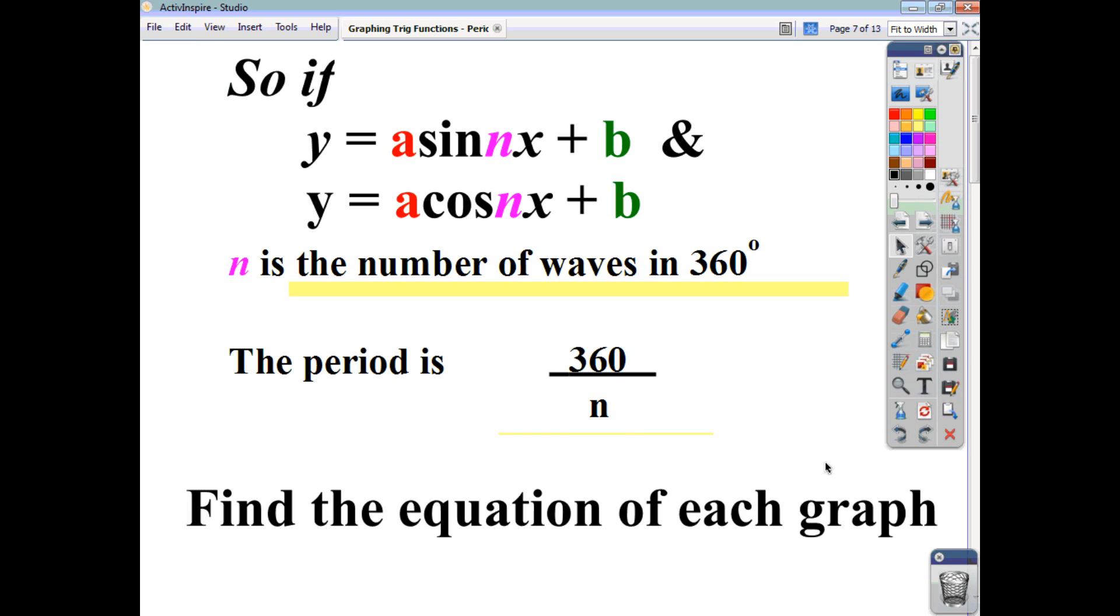So, because n was 3 in the previous example, the period is going to be 120. A third of what it was before.